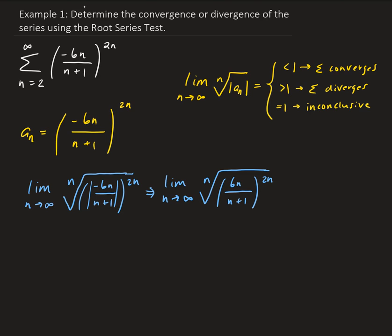And then from here, we can rewrite this algebraically. This is the same thing as taking the limit of 6n over n plus 1. So this is all to the 2n power, and then we have 1 over n.